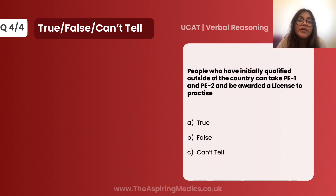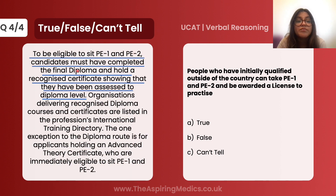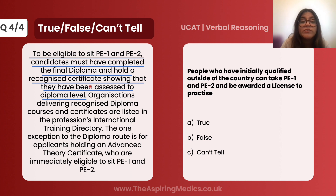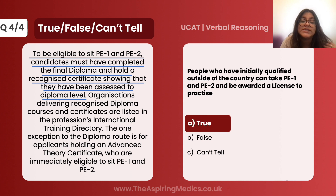The final question: people who have initially qualified outside of the country can take PE1 and PE2 and be awarded a license to practice. The passage states that anyone who wants to write PE1 and PE2 must have completed the final diploma, but there's no mention of where the diploma needs to be obtained and no mention of any specific country. Therefore, it is reasonable to assume that people who qualified outside the country, as long as they have a diploma and pass PE1 and PE2, can be awarded a license to practice. So this statement is true.